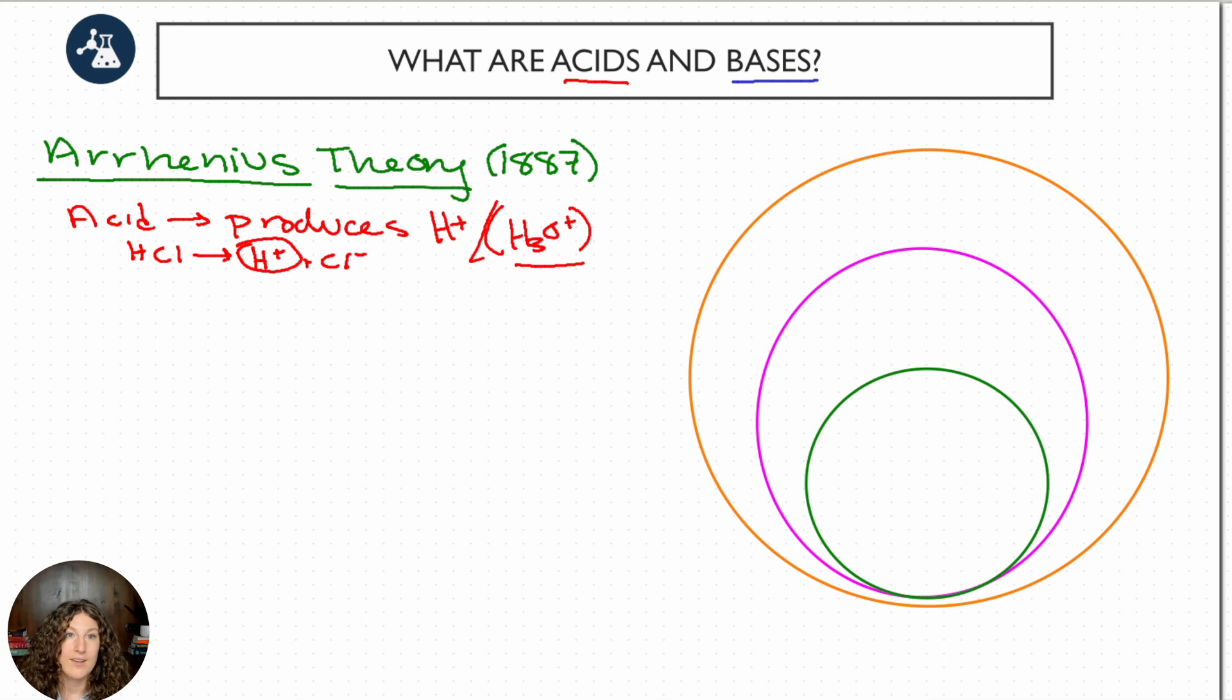For bases, the base definition for an Arrhenius base is that it produces OH minus ions in solution, also known as hydroxide ions. So if our product of our reaction produces OH minus, it's an Arrhenius base. For example, sodium hydroxide, when it ionizes, produces Na plus and OH minus. The OH minus indicates to us this is an Arrhenius base.